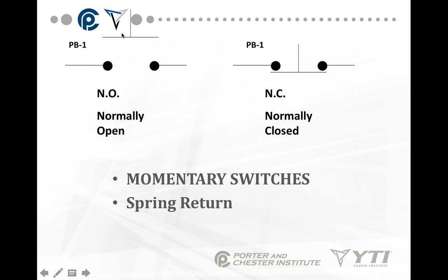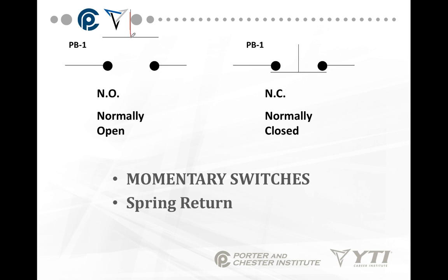Momentary switches are indicated by this T shape. If you look at this switch, we basically have a T — you push it down, it makes contact. You remove the force and it reopens back to its normal position. Here I have a normally closed version — the action would be to push it down, pulling it off the contacts, then release it and it pushes back up. These are considered momentary switches; they do not stay in position.